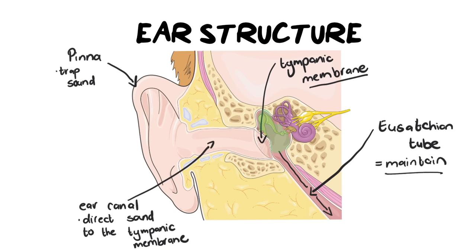A lot of matric students write that the Eustachian tube equalizes pressure — yes, it does — but when you are writing its function, you must say it maintains the pressure. Please do not write that it equalizes the pressure. The equalizing aspect is more like how it does it, whereas when we want the function, we want why it is doing it.